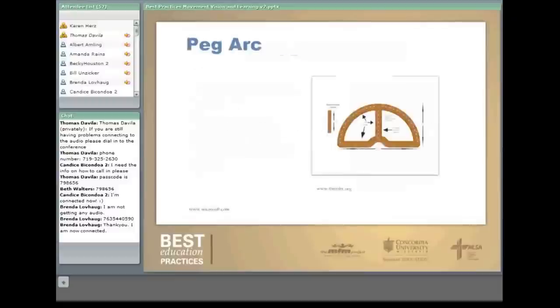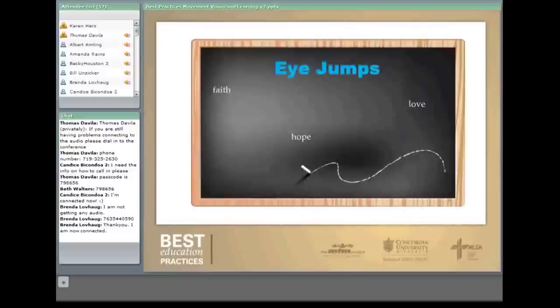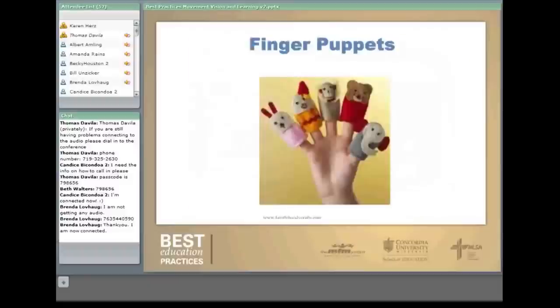We also need to practice jumping skills. If you have handy volunteers, they can make a peg arc — students take golf tees and leapfrog them on the wooden arc, which is held up closer to their eyes. The plans are available at the Minnesota Learning Resource Center website. You can also do eye jumps: write words on your whiteboard, call out the words — hope, faith, love — and the students' eyes jump to those words. Similarly, finger puppets work well for eye jumping practice.